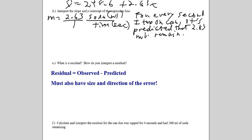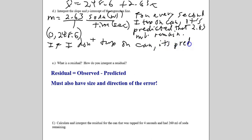Now, it all says look at the y-intercept. Let's look at the y-intercept. The y-intercept is 0, 248.6. So, what that's saying is, if I don't tap on the can. In other words, 0 seconds, it is predicted 248.6 milliliters remain. So, if I don't tap on the can at all, that's how much should be in the can.